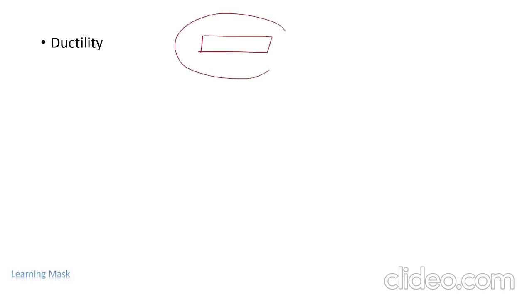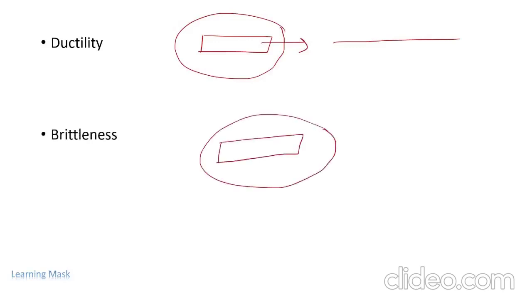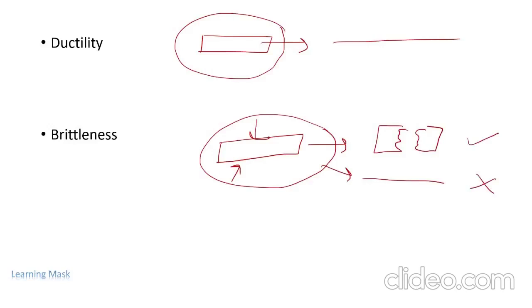The next property is ductility. Ductility means that if we can change a material into wire by application of force, then that property is called ductility. The next property is brittleness — if a material breaks upon application of force or pressure and cannot be changed into wire form, it is called a brittle material. An example of a brittle material is glass, and examples of ductile materials are gold and copper wire.